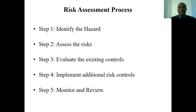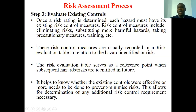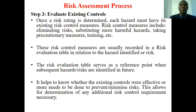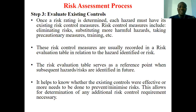The third step is to evaluate the existing controls, the fourth is to implement additional risk controls, and the fifth is to monitor and review. Under the third step — evaluate existing controls — the controls that we have put in place, we need to assess and evaluate them to make sure they are effective. If they are not effective, then we implement the fourth step: implement additional controls. We determine what has been done and measure whether the controls can deal with the risks. If they have not been effective, we change them.